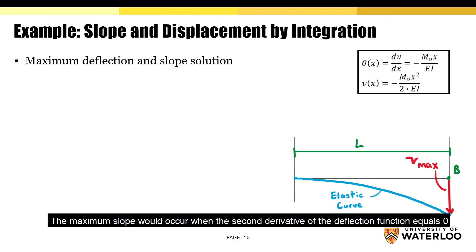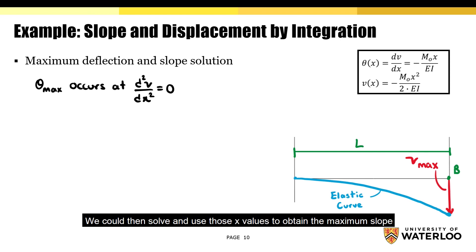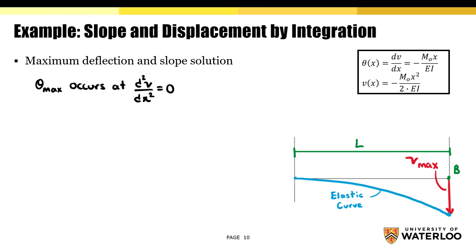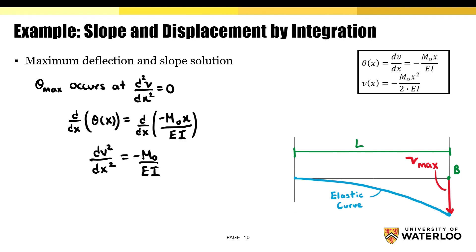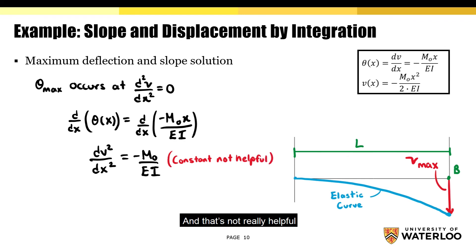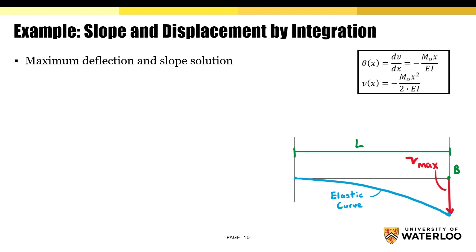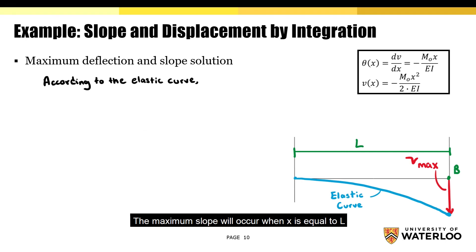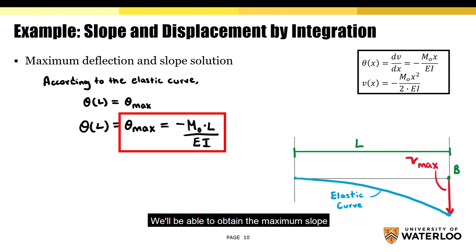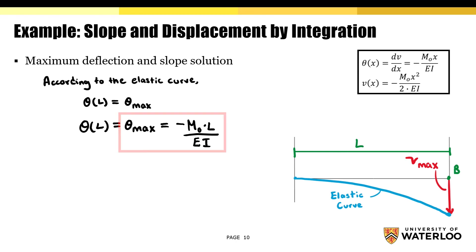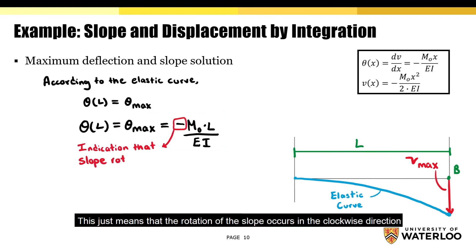The maximum slope would occur when the second derivative of the deflection function equals 0. If we take a derivative of the slope function, we'll end up with a constant, which is not very helpful. So, just as before, we'll look at the elastic curve. Based on the elastic curve, the maximum slope will occur when x is equal to L. Plugging x equals L into the slope equation gives us the maximum slope. Notice how the sign is negative — this means that the rotation of the slope occurs in the clockwise direction.